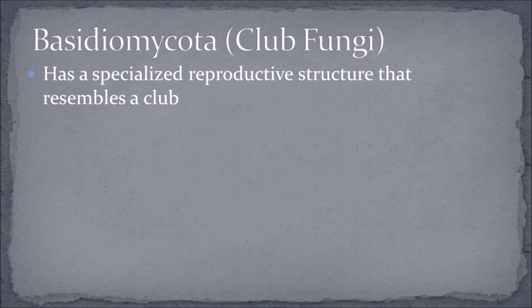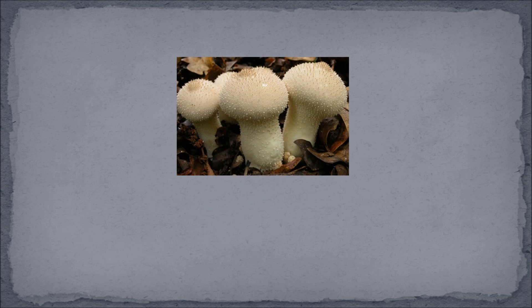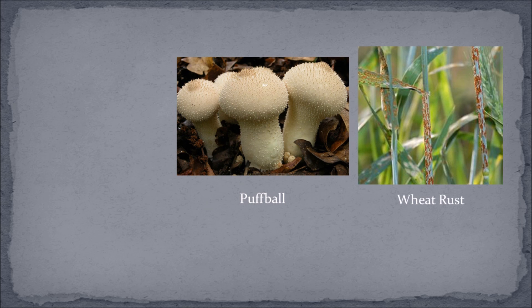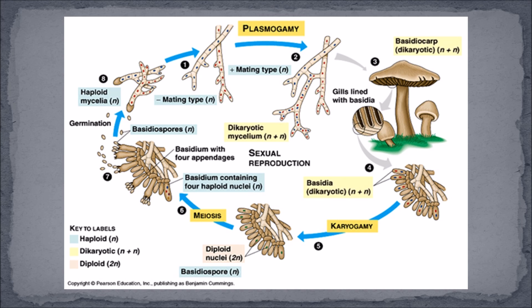One other phylum is called basidiomycota, or club fungi. The name comes from a specialized reproductive structure called a basidium, which resembles a club and produces spores. These basidia are found on the gills located under mushroom caps. Examples include puffballs, wheat rusts, and toadstools. A basidium spore germinates to produce a haploid primary mycelium. Fruiting bodies push above the ground as mushrooms and expand rapidly due to cell enlargement from cytoplasm pressure. When the mushroom cap opens, two nuclei in each basidium fuse to form diploid zygote cells, then meiosis occurs, forming clusters of haploid basidium spores.